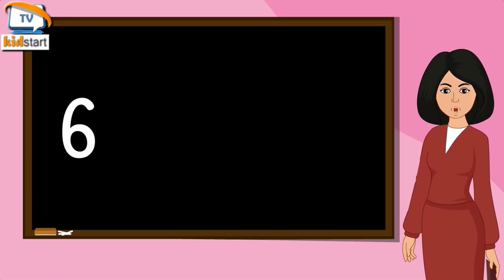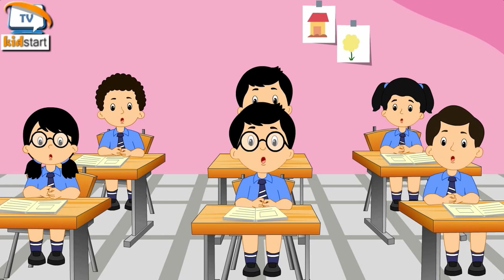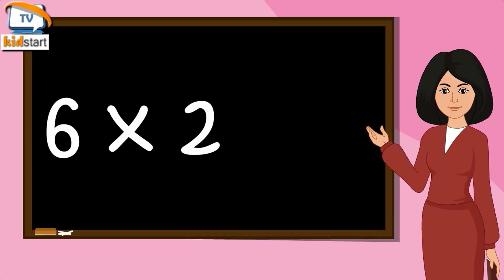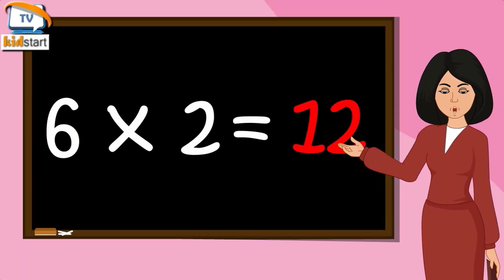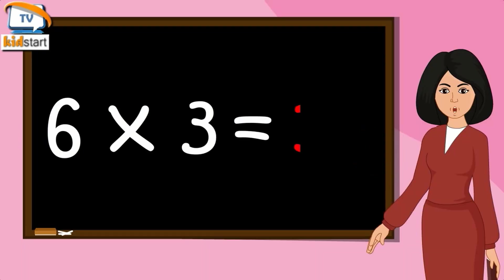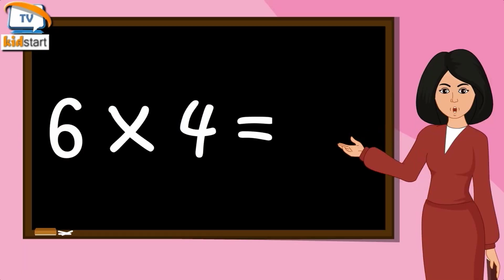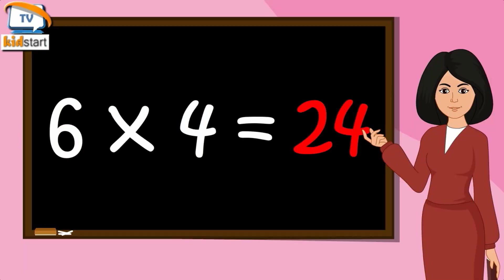Six ones are six. Six twos are twelve. Six threes are eighteen. Six fours are twenty-four.